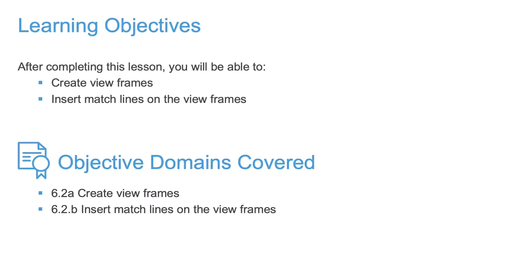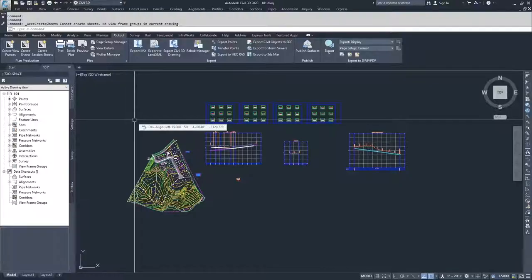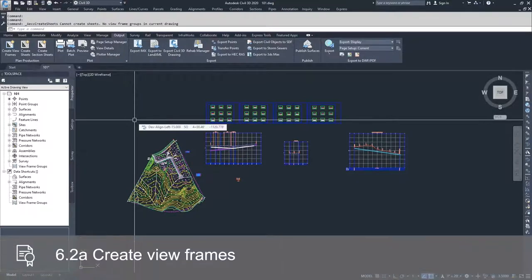Now that we've pretty much created all the objects that we can create inside Civil 3D, we're going to start talking about plan production inside Civil 3D. What we're going to do now is create some view frames to create sheets based on our alignment inside of this drawing.